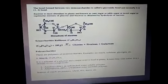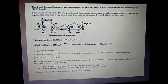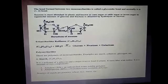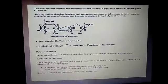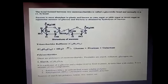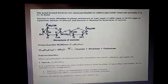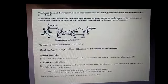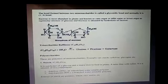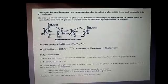First is starch. Starch is the main storage polysaccharide of plants and the most important dietary source for human beings. High content of starch is found in cereals, roots, tubers and some vegetables. It is a polymer of alpha-glucose and consists of two components: amylose and amylopectin.